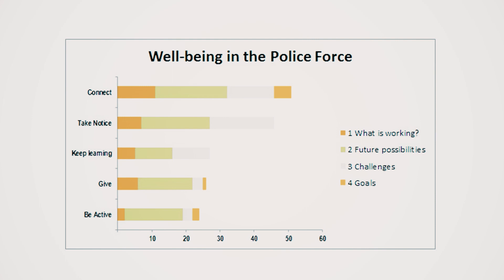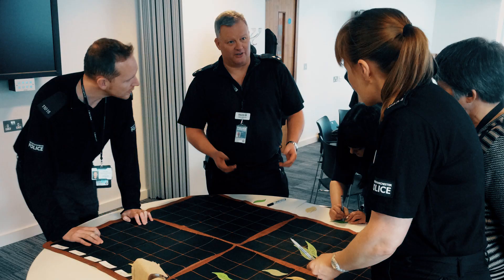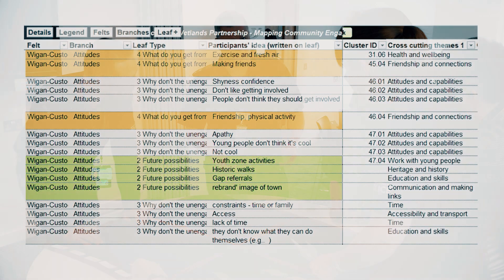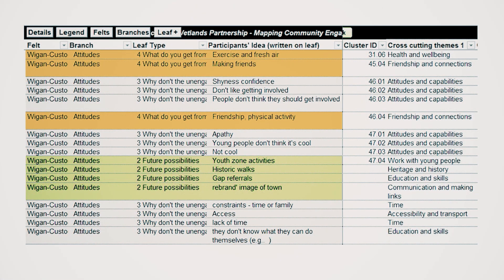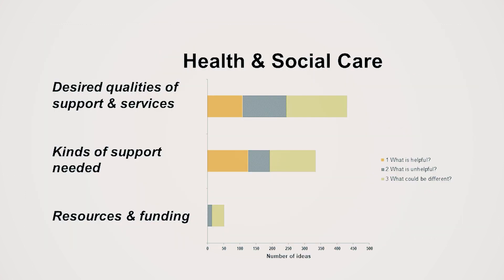The spreadsheet allows you to produce charts that let you see patterns in the data — for instance, the distribution of different types of ideas across the predetermined themes and emerging themes from participants. Here we see the relative distribution of ideas around the five ways to well-being used to structure a workshop with a police force, which produced a surprising insight: the area staff thought would have the most ideas about what works was being active, whereas in fact this had the least, prompting real discussion about their day-to-day activity levels. The spreadsheet also lets you do your own coding — following an inductive approach allowing for emergent themes, testing data against a conceptual framework, or a combination of both.